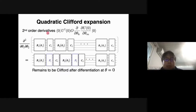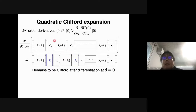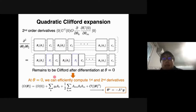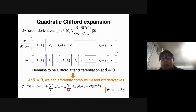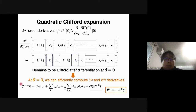The second-order derivatives work in almost the same way. If you perform the partial derivative with respect to theta_1 and theta_2, Pauli operators P2 and P1 are inserted corresponding to Pauli rotations R2 and R1. By putting theta equal to zero, we can efficiently compute first and second derivatives with respect to the parameters. In this way, we can reconstruct this expectation value as a function of the parameters in second order, and estimate the optimal parameter that minimizes this cost function up to second order.